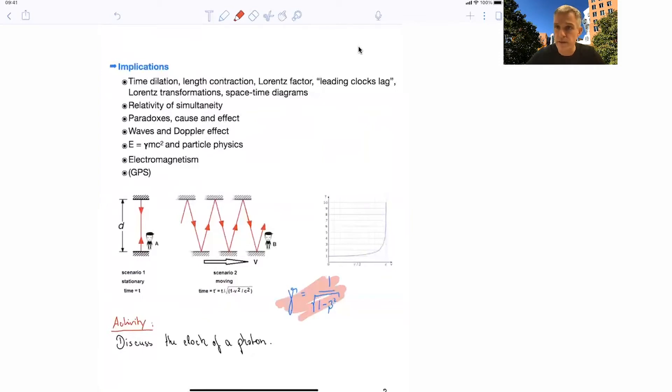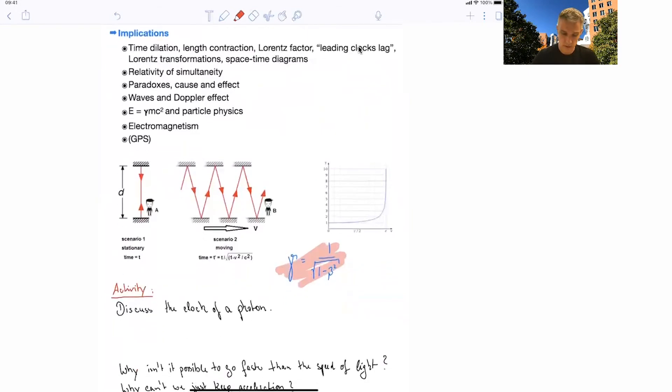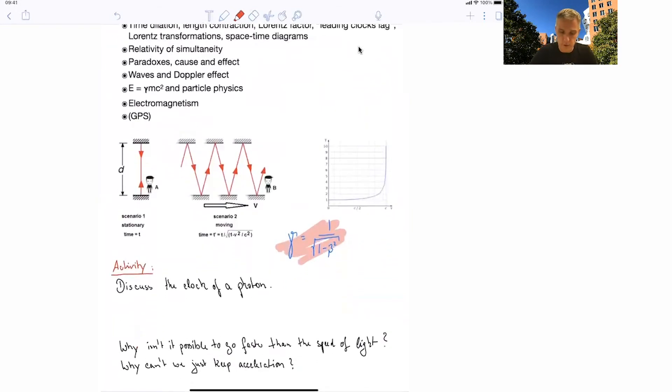So as a first activity in today's class, I want you to think about a clock which is moving with a photon, a clock which is moving with the speed of light. And also discuss, why isn't it possible to go faster than the speed of light? And why can you not just keep accelerating? So think about this a little bit. In the live class, we will have a discussion, but just come up with some sort of answer of why this is the case.